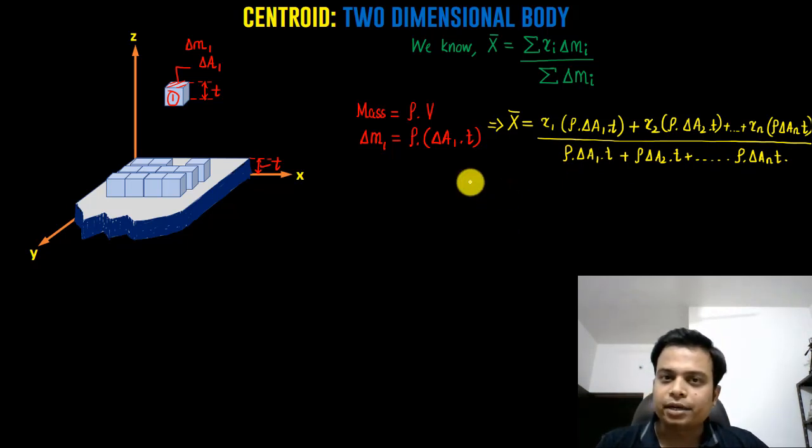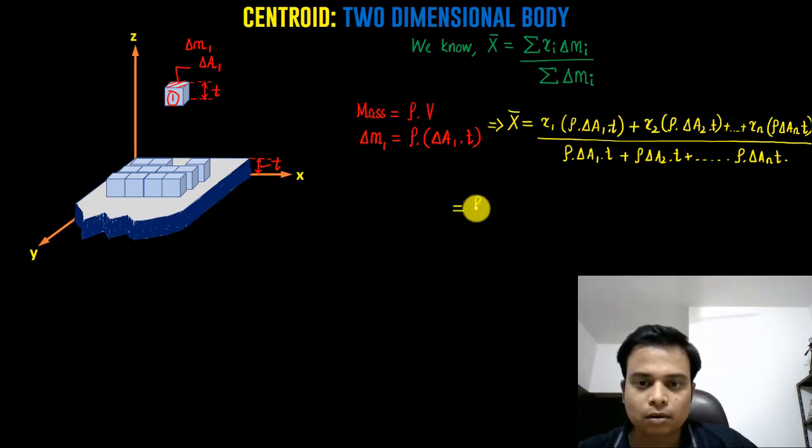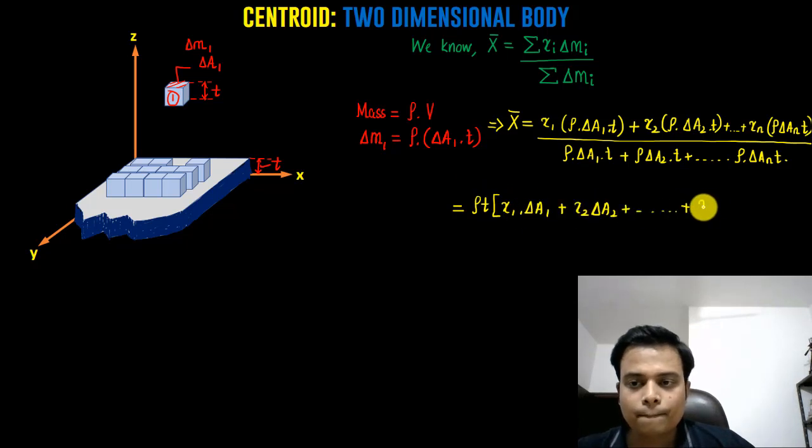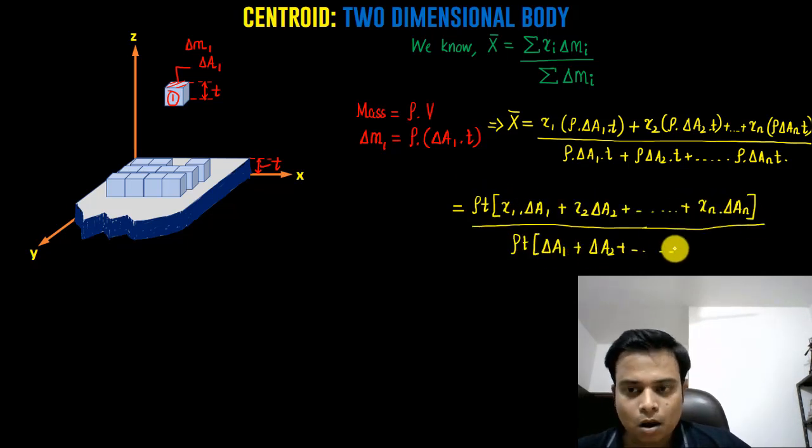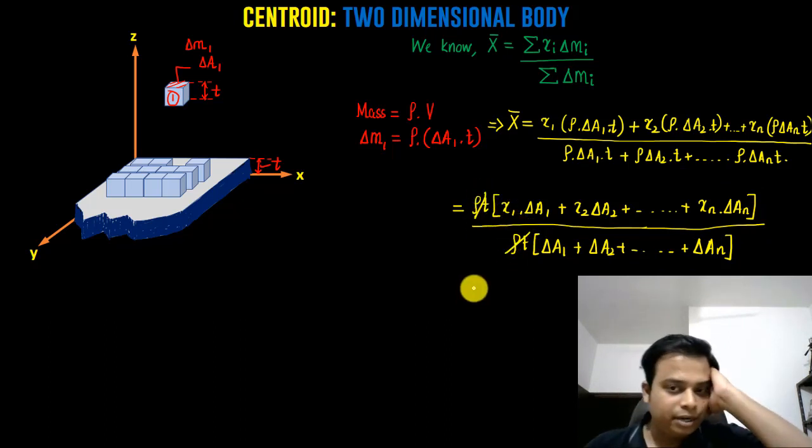Canceling ρt from both numerator and denominator, this is the final expression we get. X̄ can be written in this summation form.